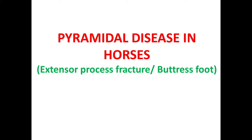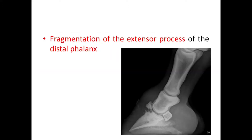So what is pyramidal disease? It is the fracture of the extensor process of the distal phalanx, also known as buttress foot. Pyramidal disease is the fragmentation of the extensor process of the distal phalanx, and you can see in this x-ray picture very clearly the extensor process fractured in the distal phalanx.